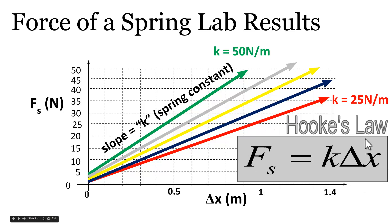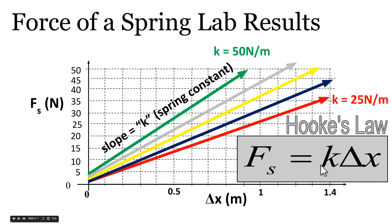Our generalization of the results from the force of a spring lab was that the force a spring exerts — either pulls with or pushes with — is equal to its spring constant, the value in newtons per meter, times the amount of stretch. This was known as Hooke's Law.